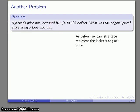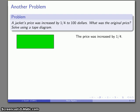So we'll go ahead and let the tape represent the jacket's original price. And we're increasing that price by one-quarter. So what does that mean? Well, I'm going to take one-quarter and it's an increase. So this is the original price. If I want to increase it, I don't lose any of these pieces. I actually get one more. So I'm going to take one of these pieces and clone it. And that's my increase in price.